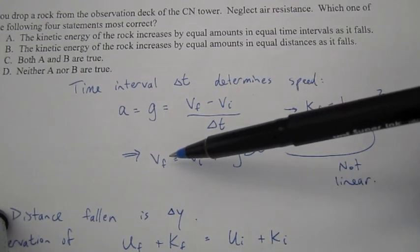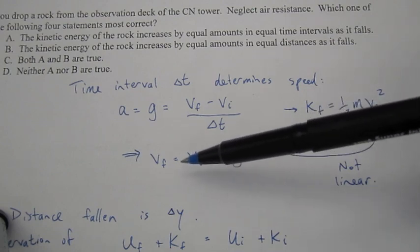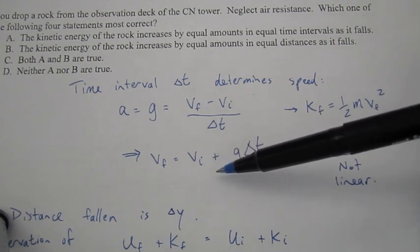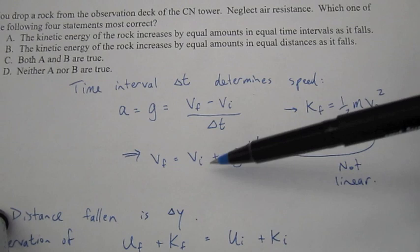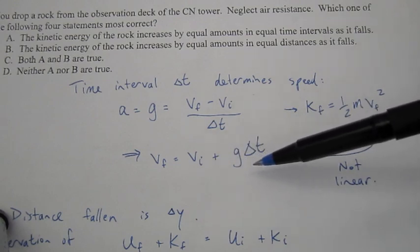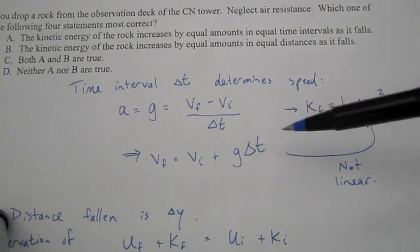So if we solve for its final speed, it's going to be its initial speed, which is zero actually, plus g times delta T.